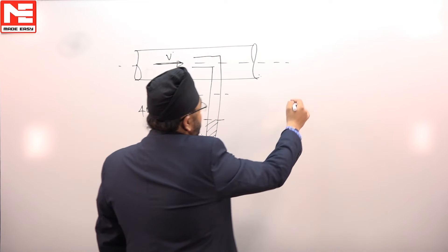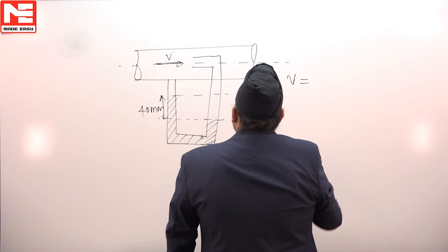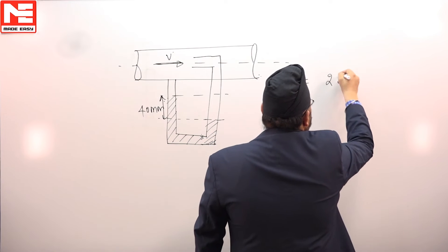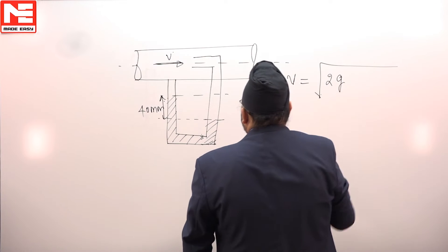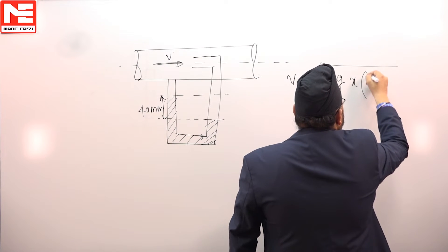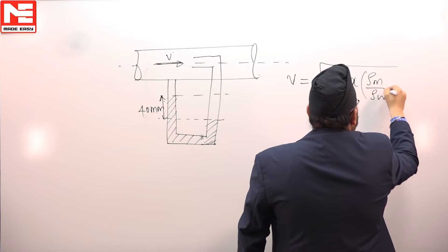And we know what will be the value of velocity. The value of velocity for this combination will be under root 2 g x rho m by rho w minus 1.